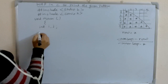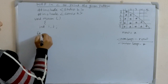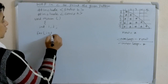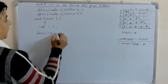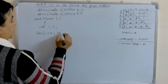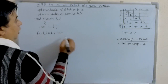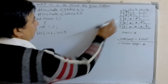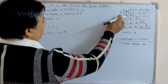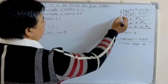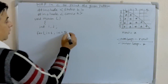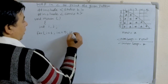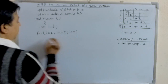Let's write the outer loop: for i is equal to 1, i less than or equal to 5, because we have to print 5 rows — 1, 2, 3, 4, 5 rows. That's why i plus plus.